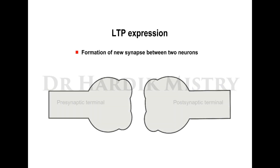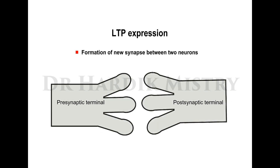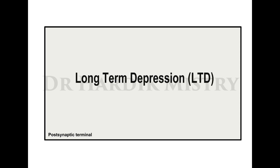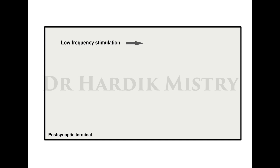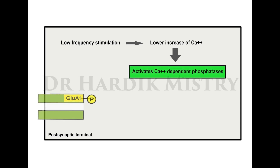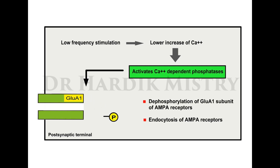LTP expression involves the formation of new synapses between neurons. If LTP occurs at all synapses, memory storage capacity would become saturated — but this is prevented because alongside LTP, some synapses show long-term depression (LTD). When low-frequency stimuli arrive at a synapse, there is a lower increase in calcium ions, which activates calcium-dependent phosphatases. These dephosphorylate the GluA1 subunit of AMPA receptors, and endocytosis of AMPA receptors also occurs.